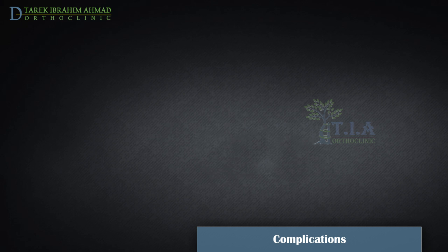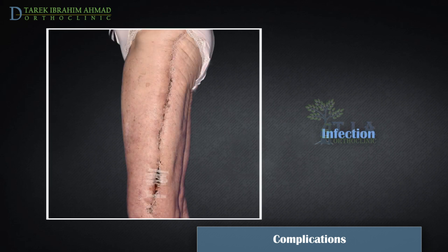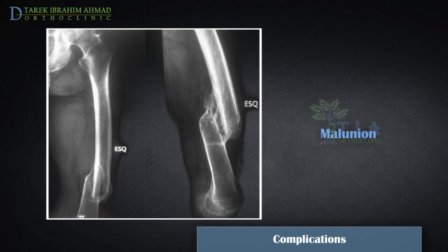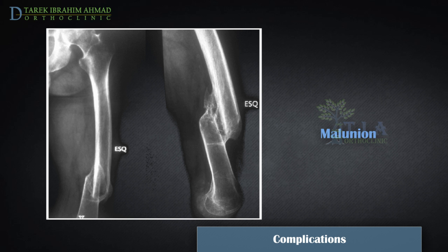Complications. The most common complications following femur fracture include infection; factors associated with increased risk include open fractures and comminuted fractures treated with open reduction. Malunion occurs when the femur heals at an abnormal angle; malunion of clinical significance is uncommon, but rotational malalignment may occur with comminuted fractures. The hip, knee, and ankle joints compensate for many minor malunions. If the patient is symptomatic, surgical correction may be needed.